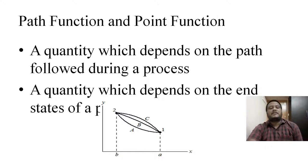Next one is path function and point function. Path function is a quantity of a system which depends on the path during the change of its state, from 1 to 2 or 2 to 1. A quantity that directly depends on the path is called a path function. Point function is a quantity which directly depends on the end states, 1 to 2 or 2 to 1. This is called a point function.